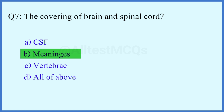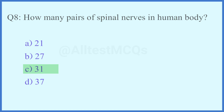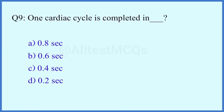Question number 8. How many pairs of spinal nerves are in the human body? Question number 9. One cardiac cycle is completed in how long? The right answer is option A: 0.8 seconds.